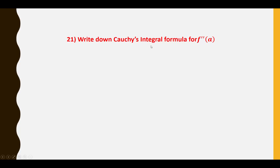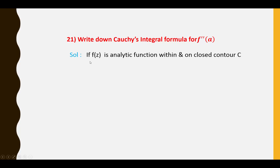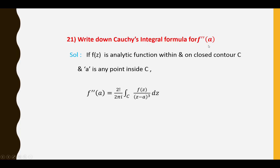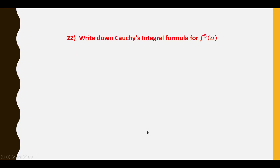Twenty-first question: Write down Cauchy's integral formula for F''(a). If F(Z) is analytic within and on closed contour C and a is any point inside C, then F''(a) = (2!/2πi) ∮_C F(Z)/(Z − a)² dZ.